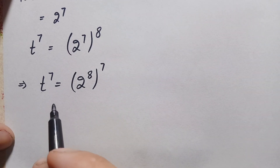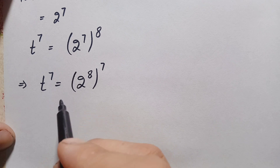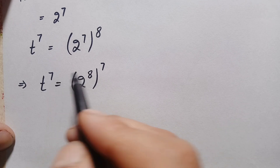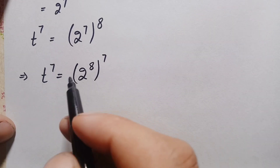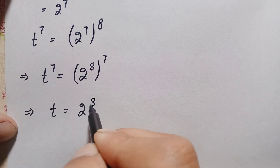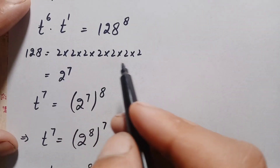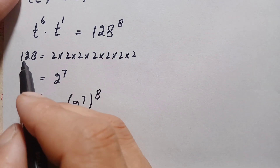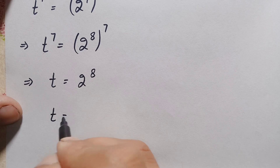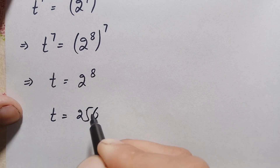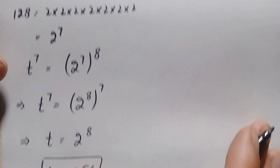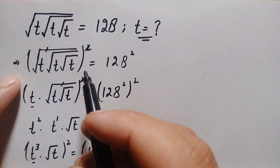Now looking at both sides of this equation: both sides have the same power of 7. When the powers are the same, we can compare the bases. So comparing the bases gives us t is equal to 2 raised to the power 8. The value of 2 to the power 7 is 128, so multiplying by 2 gives 256. Therefore, t is equal to 256.